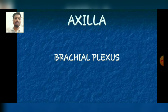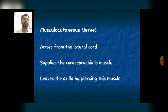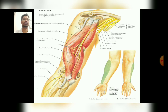Today we will discuss the brachial plexus. The musculocutaneous nerve arises from the lateral cord, which supplies the coracobrachialis muscle, and leaves the axilla by piercing this muscle. The given diagram represents the different types of branches.